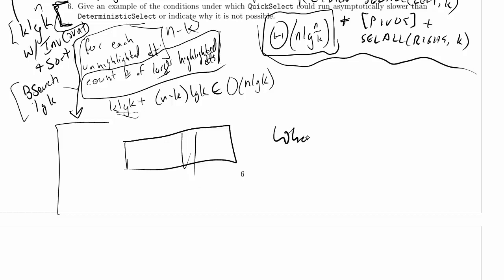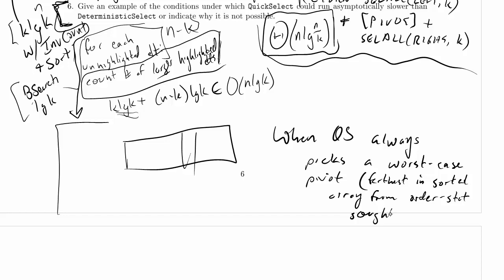So under what conditions? When quick select always, it doesn't have to be always, but sufficiently often, and for some reasonable definition of sufficiently, but we'll just say always because it just asked us to give an example. Always picks a worst case pivot, which is to say farthest in sorted array from the order statistic sought. Now notice, by the way, the user has no control over this. The person who's giving us our order statistic and our input array can't force us to always pick such a worst case pivot. The only way we can do it is with really, really tremendously bad luck. Luck that is so bad that it is not going to happen. Quick select is indeed a very, very good algorithm.